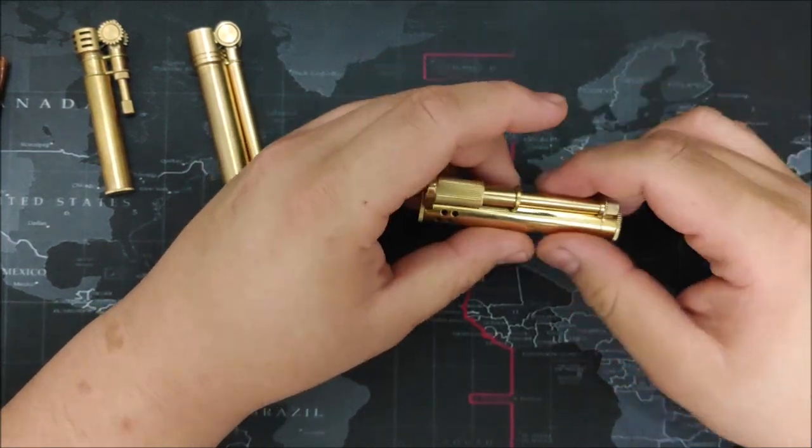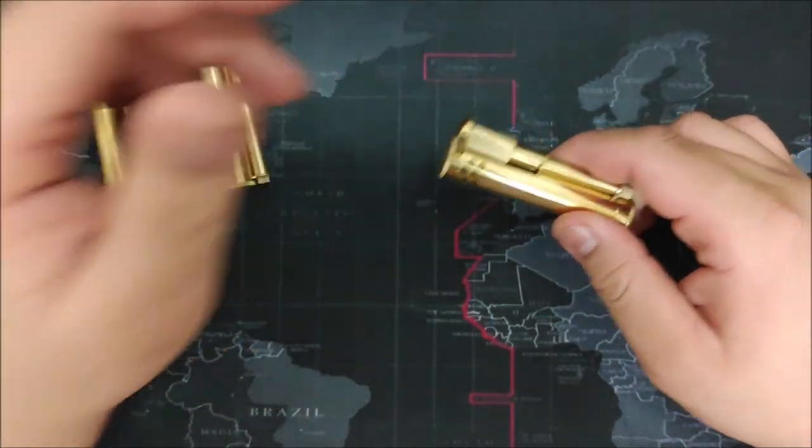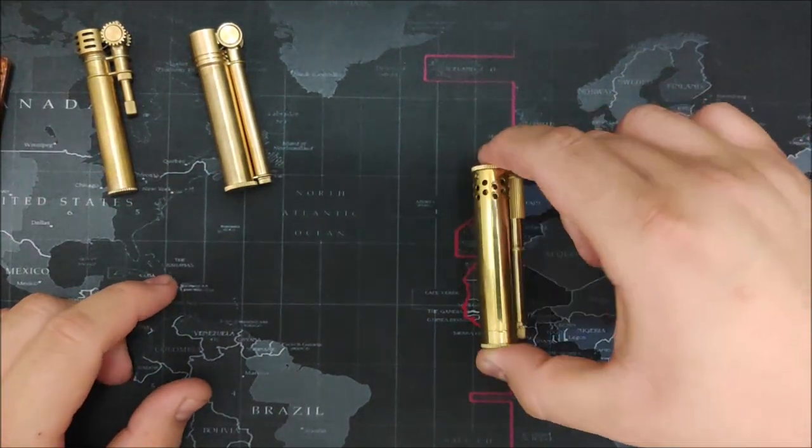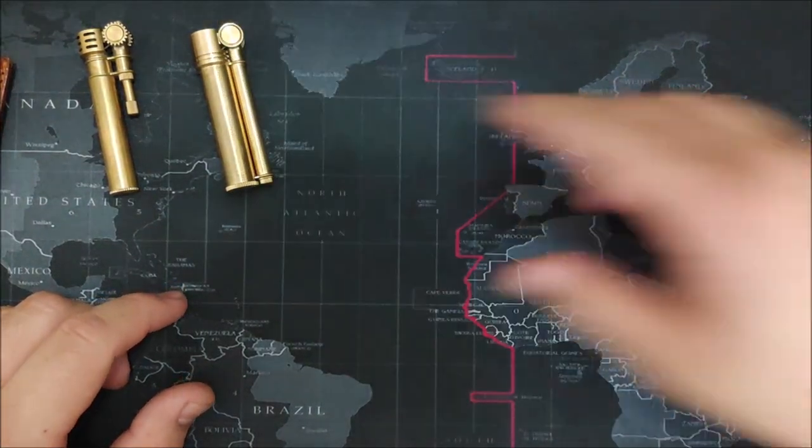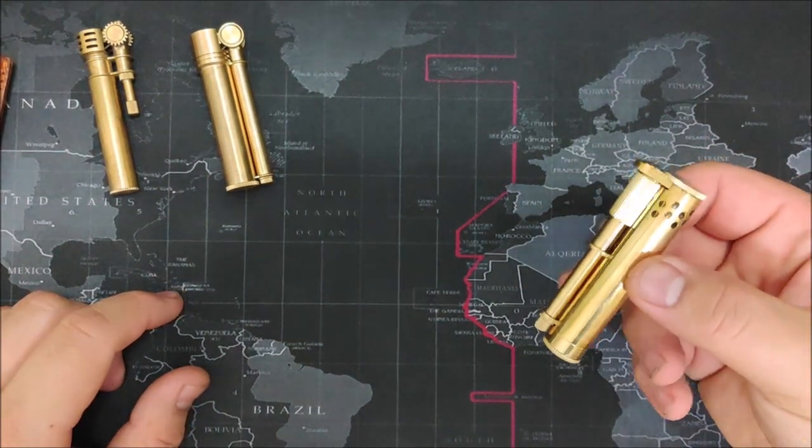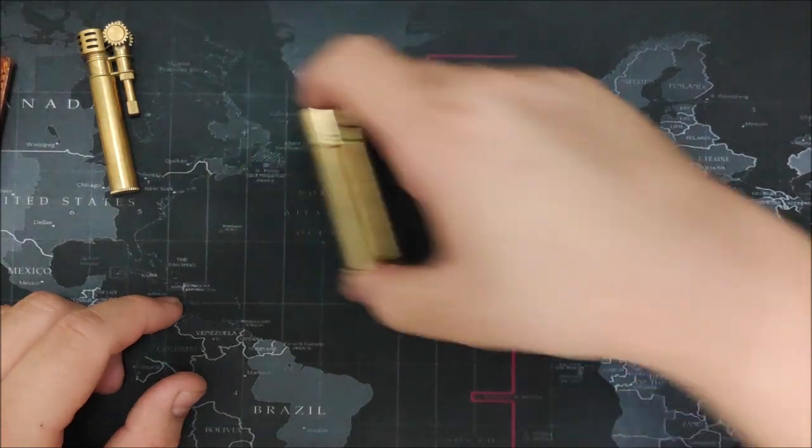So this is the Field S. You can actually hear the flint in there. If you want, you can actually get cotton and just pad it so it doesn't make that sound.